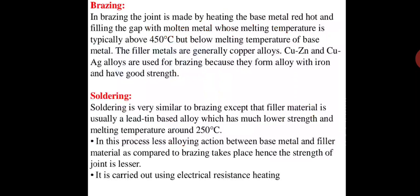Next is brazing. In brazing, the joint is made by heating the base metal red hot and filling the gaps with molten metal whose melting temperature is typically above 450°C but below the melting point of the base material. The filler metals are generally copper alloys — copper-zinc or copper-silver alloys — used because they form an alloy with iron and have good strength.